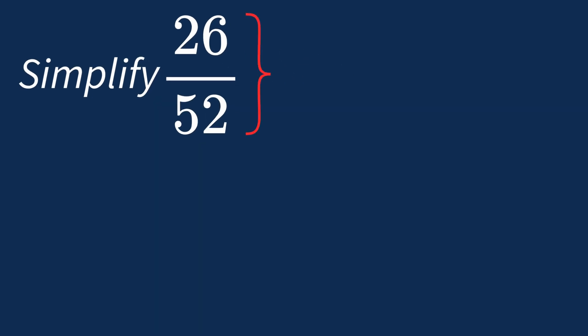To simplify 26 over 52, we need to look for the common factors between the top number, the numerator, and the bottom number, the denominator.